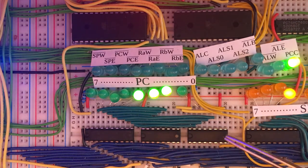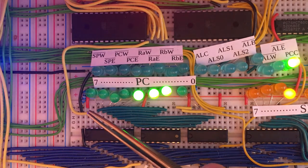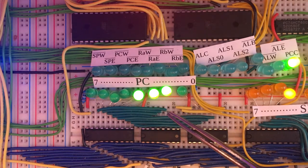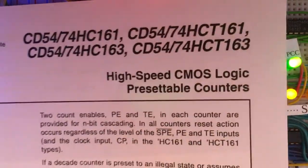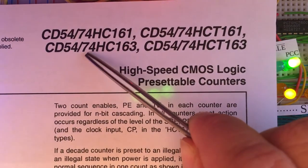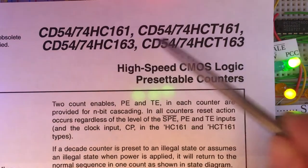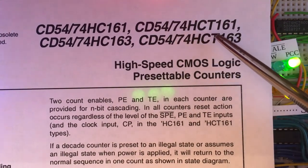This program counter is extremely similar to the one Ben Eater built in his episode — a link to his videos is in the description. The biggest difference is that we are dealing with eight bits of address, whereas in Ben Eater's computer the program counter is only four bits long since it's a memory address. If you look at that video, the principal component of his program counter is a chip called the 74LS161. Since I'm using HCT chips, mine is a 74HCT161.